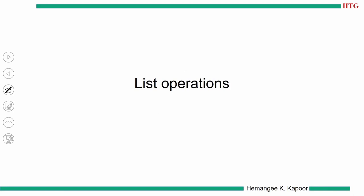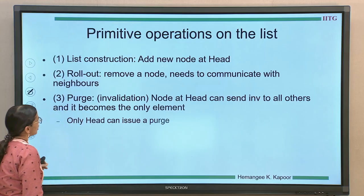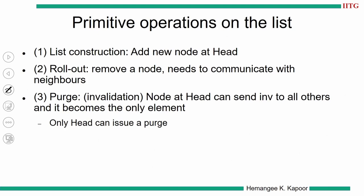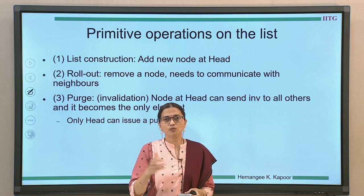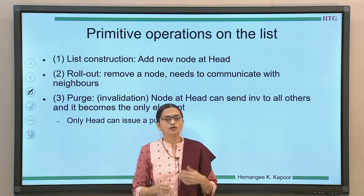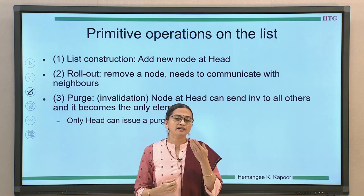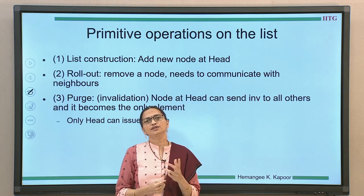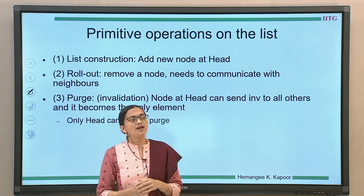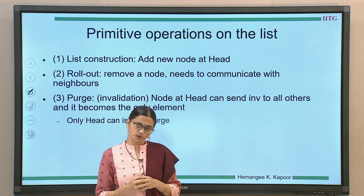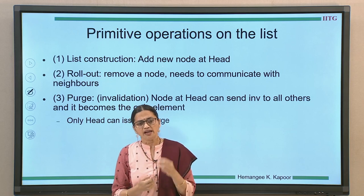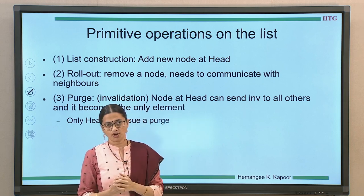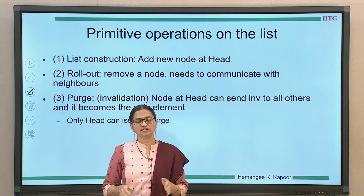With this understanding, we look at primitive operations on the list. The first is list construction. A list is constructed by first creating the head node — the home node will point to the head node, and subsequent blocks can be attached. In the SCI directory protocol, a new node is always added at the head. When a request reaches the home node, it creates a node in the linked list, home points to this new node, and this new node points to the previous head node. New nodes only get added at the head.